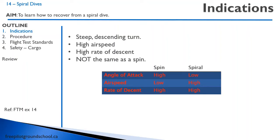The way I think about it is a spiral dive is kind of like one of those charity coin funnels — you put a coin in and it rolls around the outside of a perimeter and then goes into a hole. It's a steep descending turn with increasing rate of bank and increasing rate of turn, whereas a spin is really more like a corkscrew.